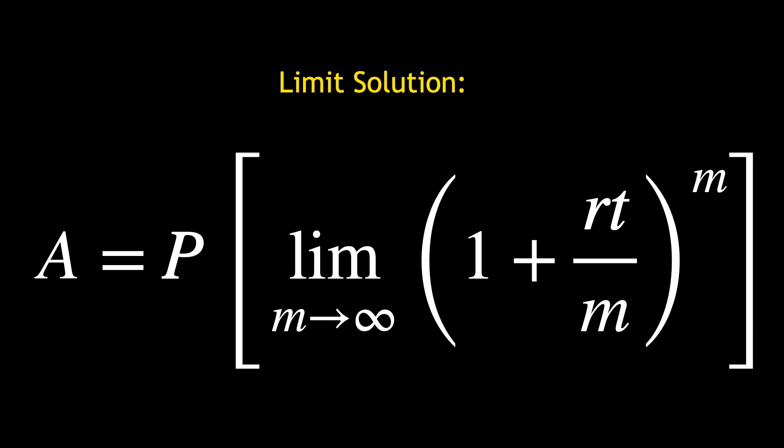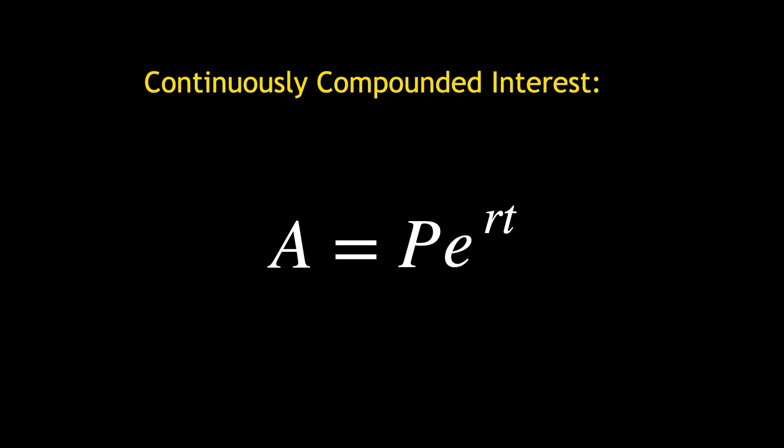Using our limit definition for e to the x, where x is rt, we can write a equals p e to the rt, which is our standard continuous compound interest formula.